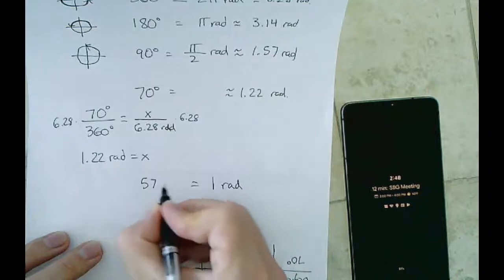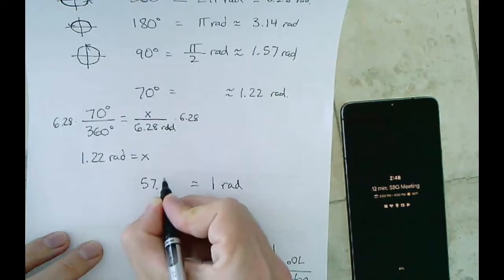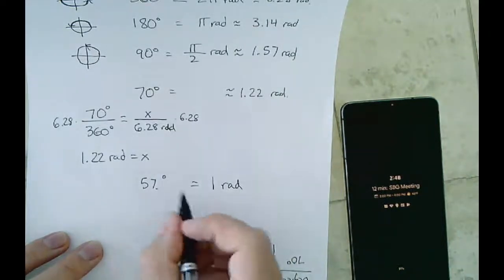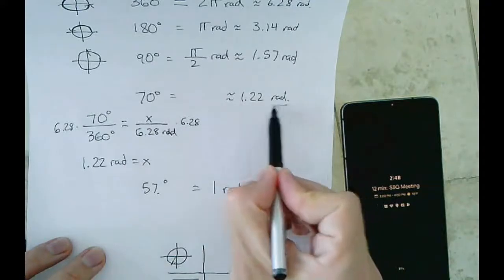I'm not quite sure if it was point something, I'm not sure, but it was around 57 point something degrees. So 70 degrees being a little bit more than 1 radian makes sense to me.